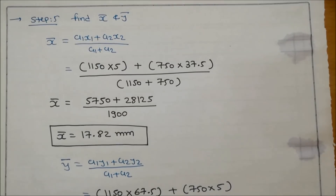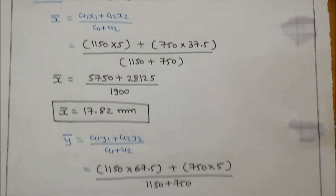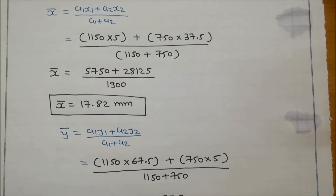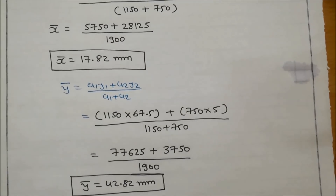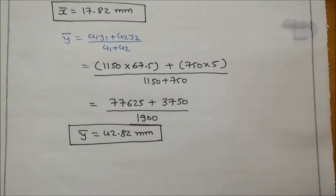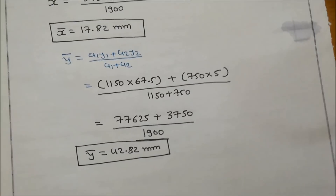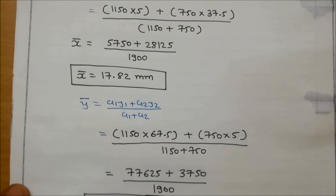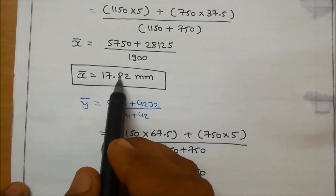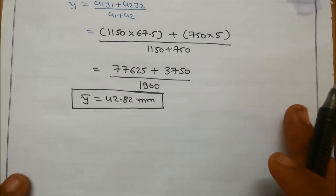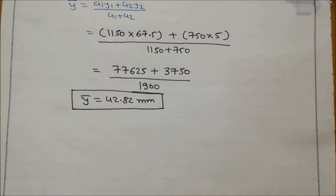Now put these values into the center of gravity equations. X-bar equals (A1·X1 + A2·X2) divided by (A1 + A2), giving X-bar equal to 17.82 mm. Similarly, Y-bar equals (A1·Y1 + A2·Y2) divided by (A1 + A2), giving Y-bar equal to 42.82 mm. So the center of gravity from the reference axis is X-bar equals 17.82 mm and Y-bar equals 42.82 mm.